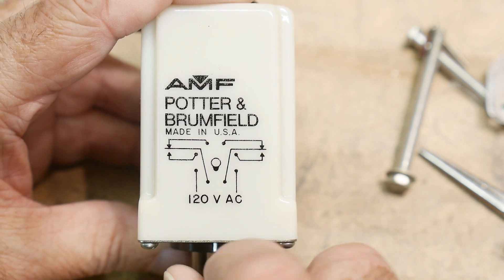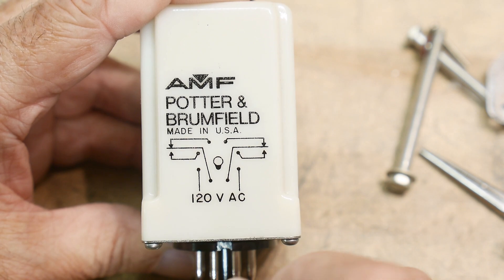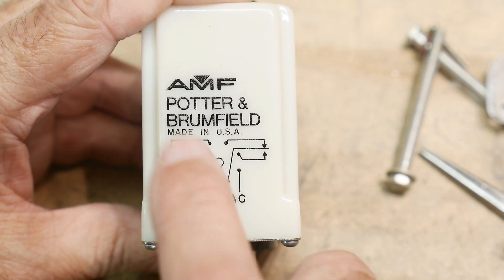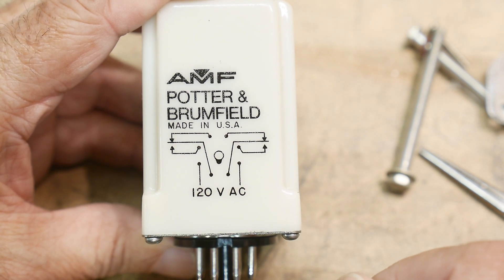You put 120 volts on this thing, it energizes the circuit, it delays for a while, then it closes the relays. There's two sets of contacts here.